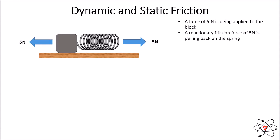As we pull on the spring and block with a force of five newtons there is no movement, so a reactionary force of equal magnitude appears in the opposite direction. Forces act in opposite directions, and if things are in equilibrium — no movement or change of speed — those forces must be balanced. With five newtons pulling in each direction they cancel out, so the resultant force is zero and the block remains stationary.